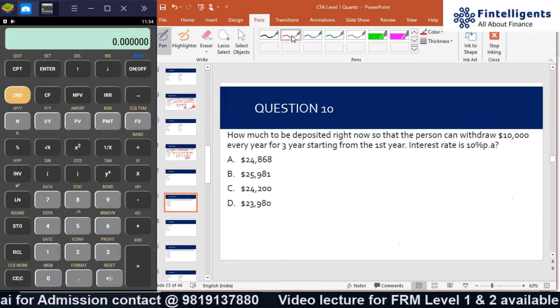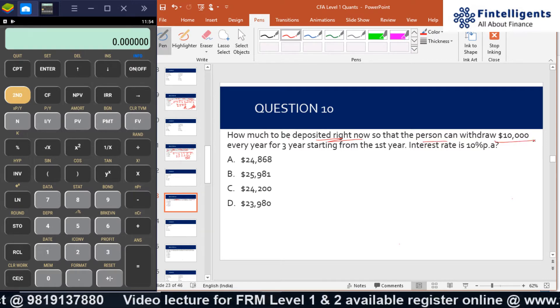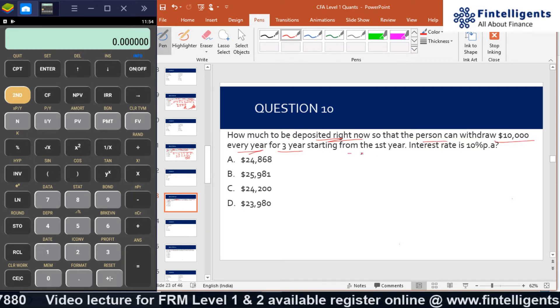The next problem asks: how much should be deposited right now so that a person can withdraw $10,000 every year for 3 years, starting from the first year?